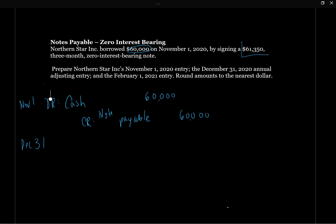What's going to happen is that at February 1st, we're going to owe $61,350 for the note. There's no interest changing hands separately, but we know the note's not free. We're not just going to give back $60,000 — we're going to give back $61,350. So over the three months, the note is going to cost us $1,350. That's the amount of interest we owe. Previously we knew we owed 9% interest, but we don't need to calculate the rate here.